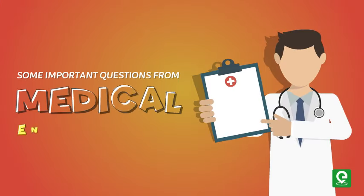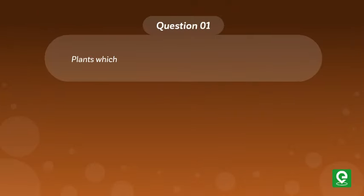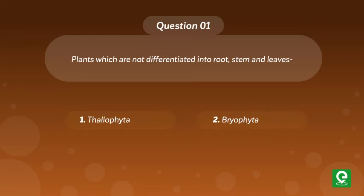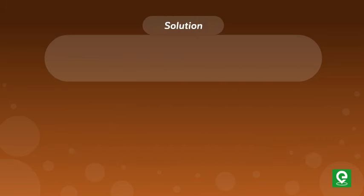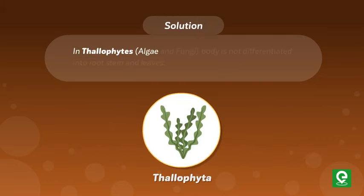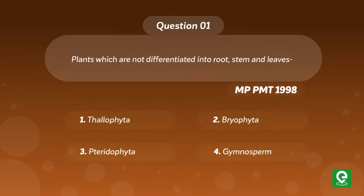Question 1 (MPPMT 1998): Plants which are not differentiated into root, stem, and leaves — (1) Thallophyta, (2) Bryophyta, (3) Pteridophyta, or (4) Gymnosperm? Solution: In Thallophytes, algae and fungi, the body is not differentiated into root, stem, and leaves. Hence option one is correct.